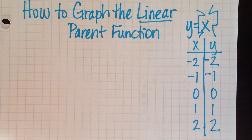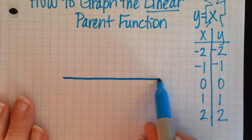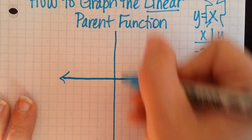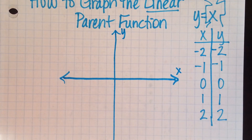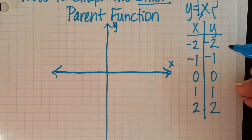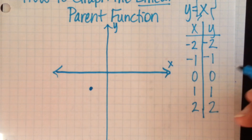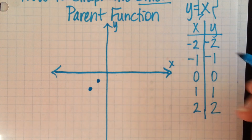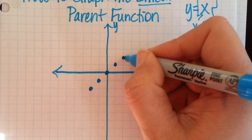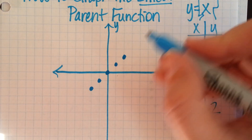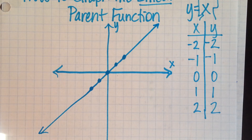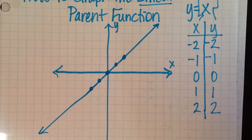Those points look pretty easy to graph, so we draw our coordinate plane and label the x-axis and y-axis. Then we put our points on it: negative 2, negative 2; negative 1, negative 1; 0, 0; 1, 1; and 2, 2. Notice these are all going in a line, so we can connect the dots. That's one way to graph the parent function.